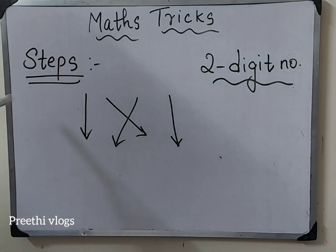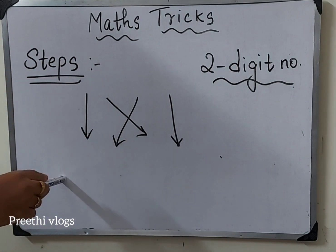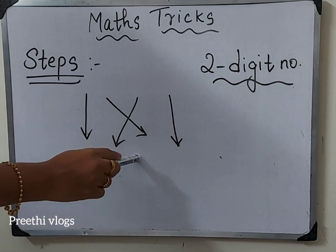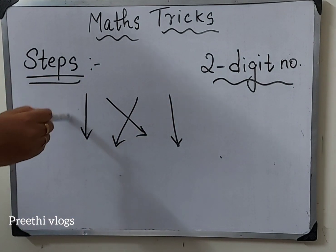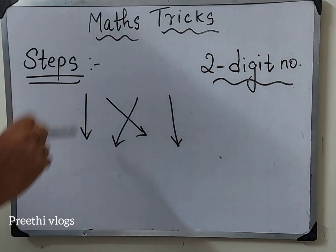Two-digit numbers can be done with representation. First, down arrow mark, cross arrow mark, and another down arrow mark. In this representation, we will see how to multiply one example.